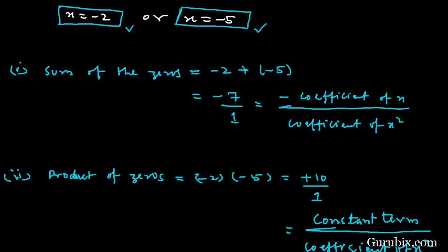At x equals minus 2 and x equals minus 5, the graph of this quadratic polynomial will intersect the x-axis. Now we shall verify the relationship between the zeros and the coefficients. The sum of the zeros is minus 2 plus minus 5, which equals minus 7. We can write this as minus 7 over 1, which equals minus 7 divided by the coefficient of x squared — that is, minus the coefficient of x over the coefficient of x squared.